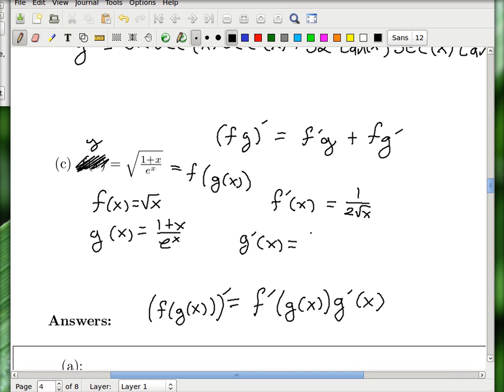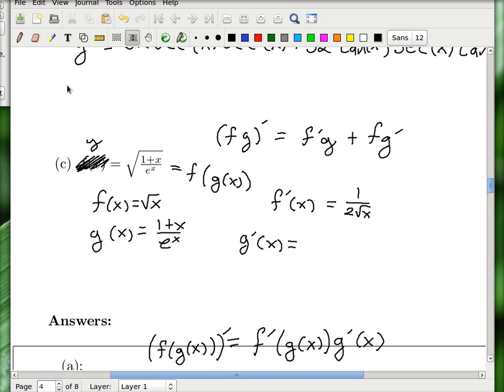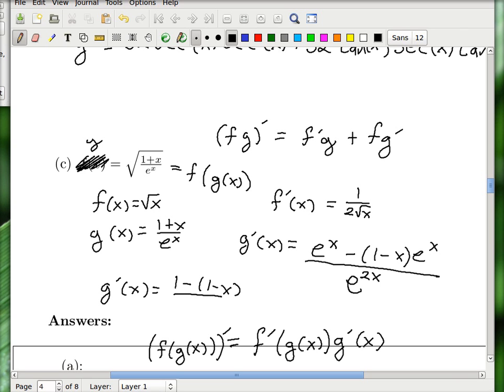So, I'm going to do the quotient rule here to find g prime. Let me push the rule down. So, quotient ruling, the derivative of the top is 1, so I'm not going to write it, times e to the x minus, leave the top alone, derivative of the bottom is the same as the bottom. And now e to the x squared is the same thing as e to the 2x.